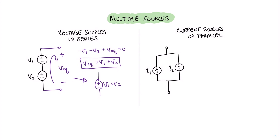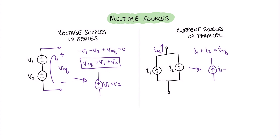Now let's move our attention to the two parallel current sources. What we want to find is an equivalent single current. Using KCL at this node, we have I1 coming in, I2 coming in, and I equivalent moving out. The equation we get is I1 plus I2 equals I equivalent. So a set of parallel current sources can be written as a single current source of I1 plus I2.